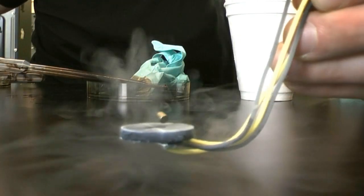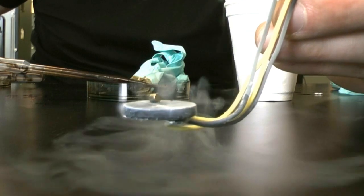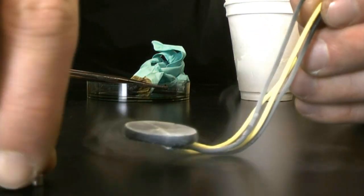When the superconductor heats up, it actually loses its superconducting properties and can no longer counter the magnetic field, letting the magnet fall. Normal conductors, like metals, can do this to an extent, but their non-zero resistance causes the induced currents to die out almost immediately.